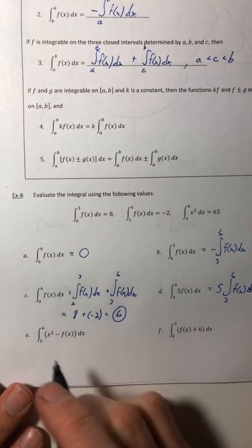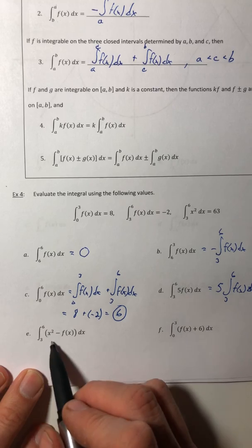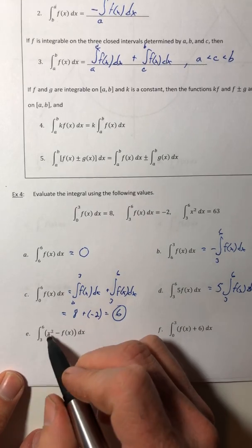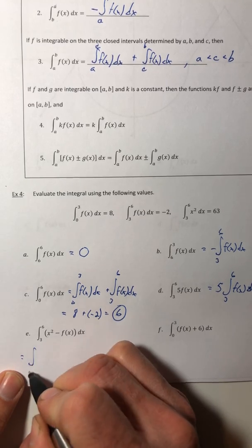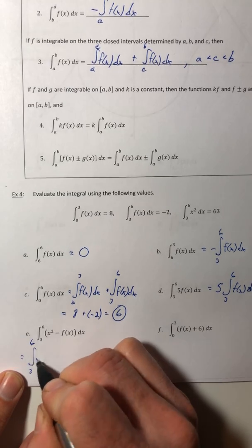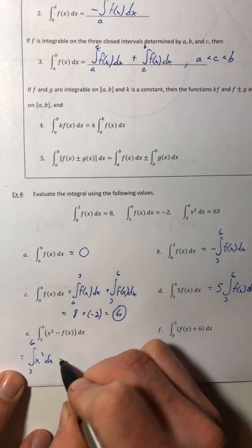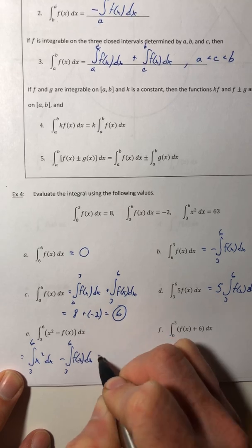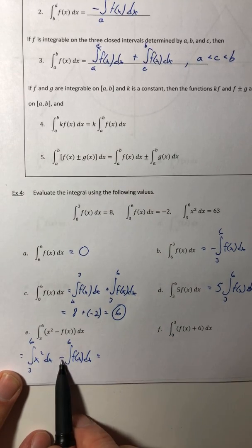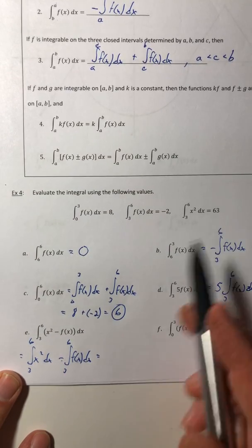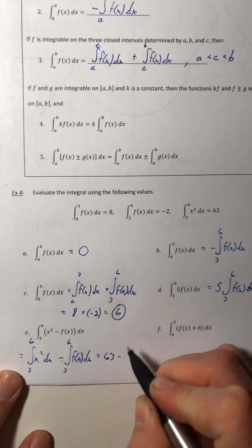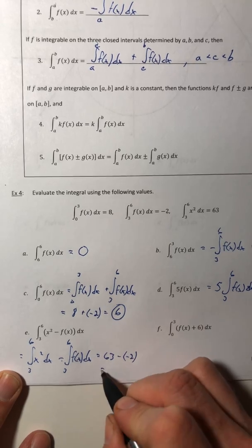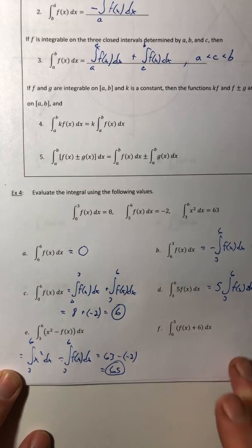Alright, moving on. The integral from 3 to 6 of x squared minus f(x) dx. So I can integrate each one on their own and then just subtract them. So from the x squared it was 63 minus a negative 2, so 65.